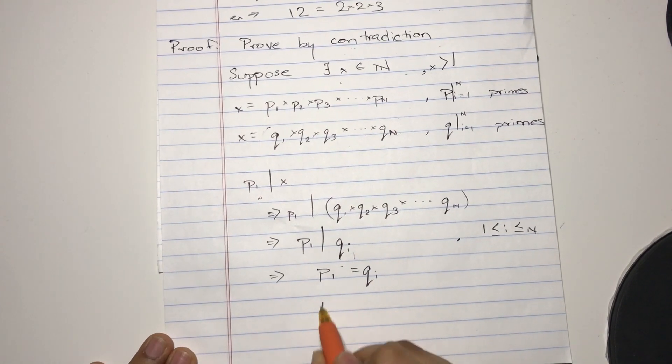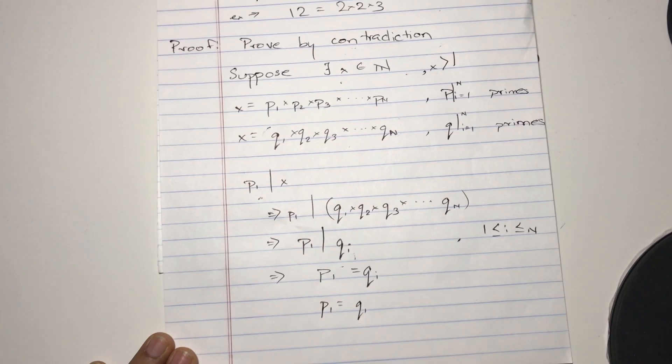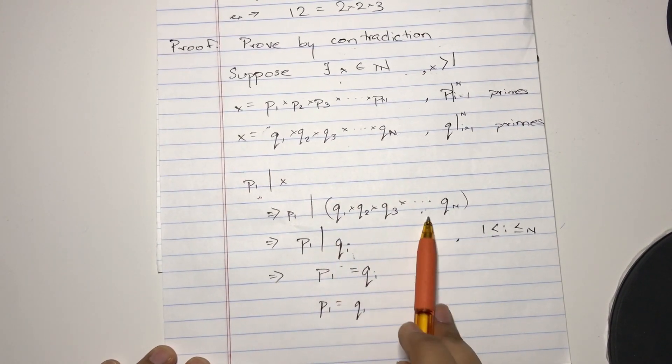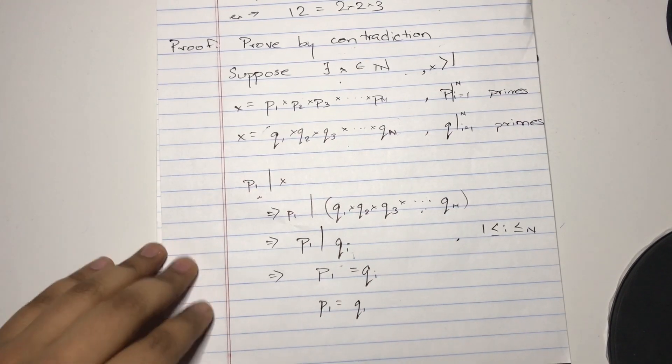Just for convenience sake, let's just say p1 equals q1. So let's say the i is over here. We rearrange it to make it q1, and the q1 becomes qi. I hope that made sense.